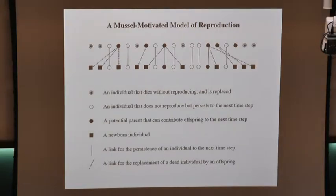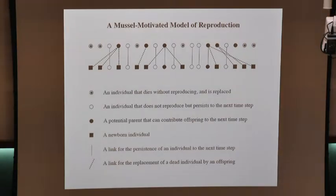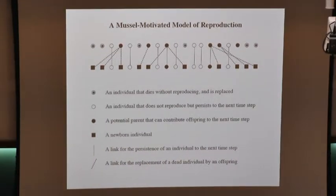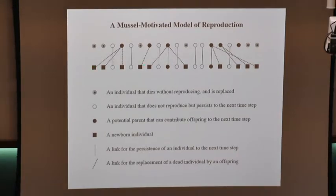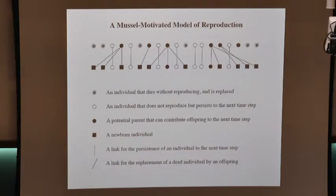Another model I'll reference is the Moran model — a model of overlapping generations. In the Moran model, in one time step, only one individual reproduces and one individual dies. I pick an individual to reproduce at random, make one offspring, and let it replace the one who died. If I let the number of killed and reproducing individuals both be one, it's a Moran model. So I can have the Wright-Fisher and the Moran model at two extremes of this more general model.